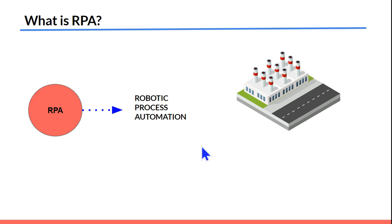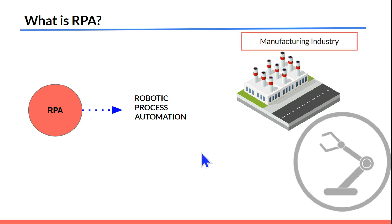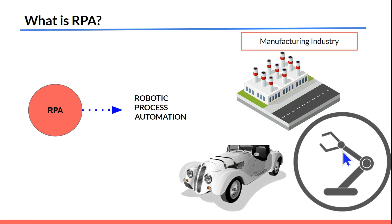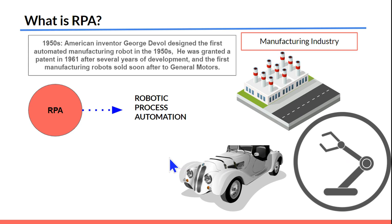Let's slightly go back to the 1950s to understand how the development of physical robots started. The job of a physical robot is, for example, to paint a car. Nowadays in the manufacturing industry, almost all different products are manufactured by robots. This was actually started by an American inventor called George Devol, who designed the first automated manufacturing robot in the 1950s. He was granted a patent in 1961, and the first manufacturing robot was sold soon after to General Motors.